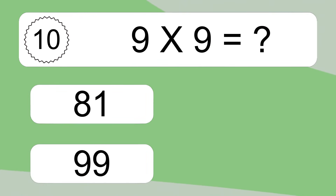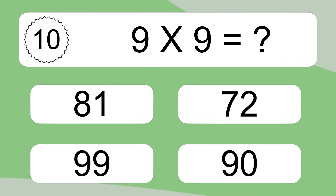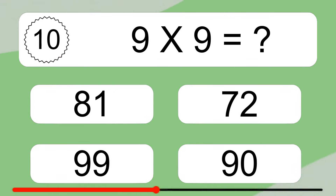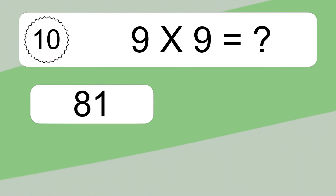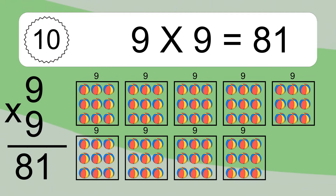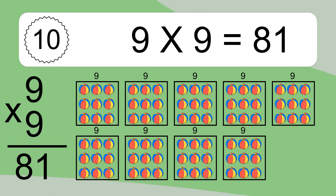9 times 9 equals what? 9 times 9 equals 81. We have 9 boxes, and each box has 9 colorful balls inside. If you count all the balls in all the boxes together, you will have 9 times 9 balls. This equals 81 balls.